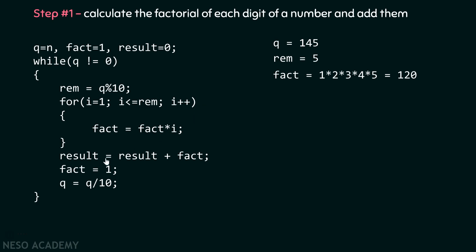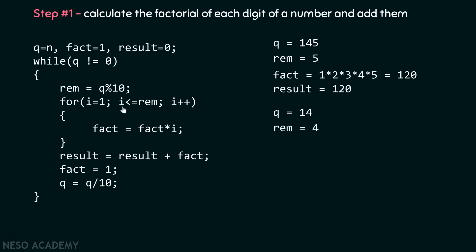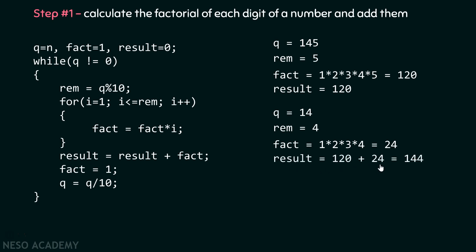Since 14 ≠ 0, we repeat. rem = 14 mod 10 = 4, so we run the for loop 4 times, giving fact = 1 × 2 × 3 × 4 = 24. Result is updated: 120 + 24 = 144. Fact is reset to 1, and q becomes 1 (14 ÷ 10).